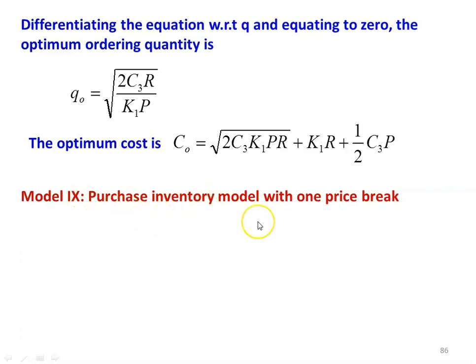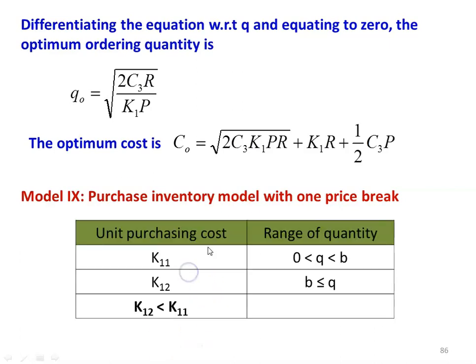Model number 9: purchase inventory model with one price break. We give one discount for a set of purchases. The unit purchasing cost is K11 and K12, where K12 < K11. When the purchase quantity Q is less than B and greater than 0 (where B is the limiting quantity), the cost of one item is K11. When Q is greater than or equal to B, the cost of the item will be K12. So when the ordering quantity is less than B, the cost is higher; when greater than or equal to B, the cost will be K12.